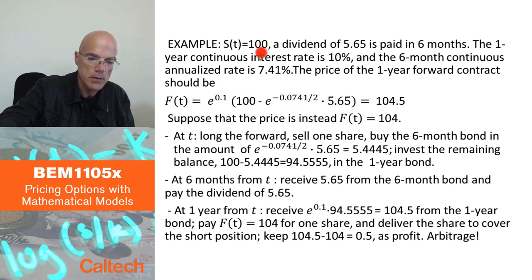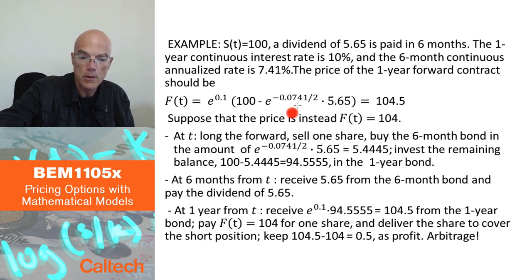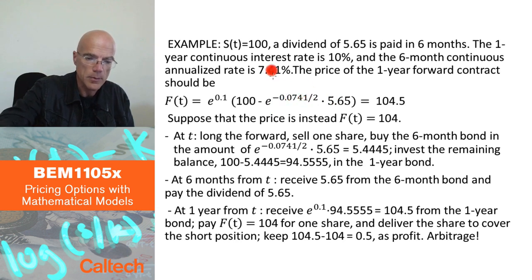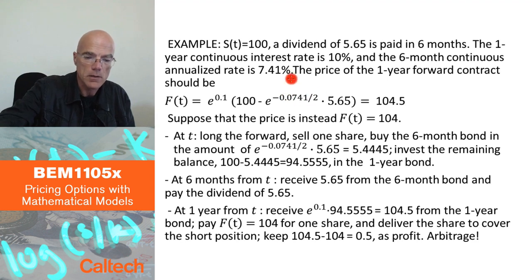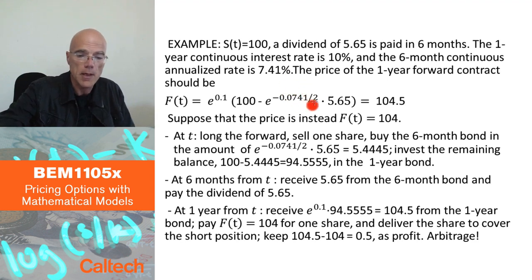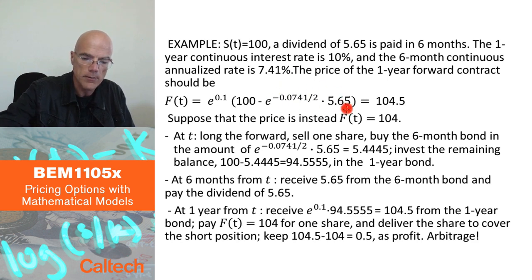The stock price today is $100. The dividend is $5.65, and it's going to be paid in six months, so the present value is obtained by discounting by the six-month rate. That's e to the minus 0.0741, but since this is an annualized rate, I have to divide by two because six months is one-half of a year — so it's times one-half. 7.41% times one-half is my discounting factor for the six-month payment of $5.65.